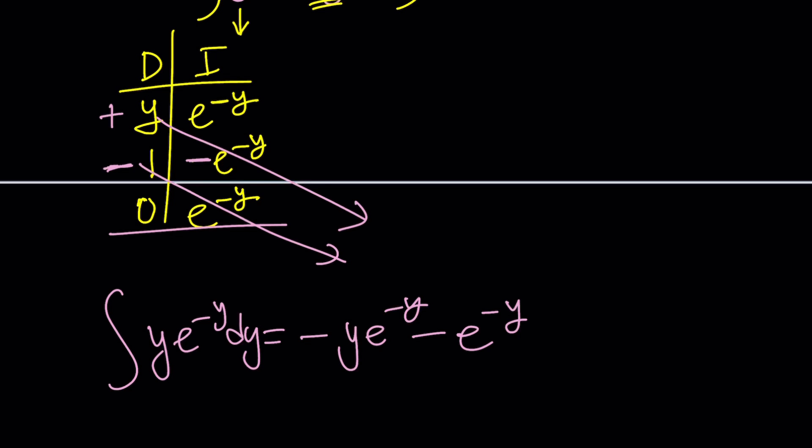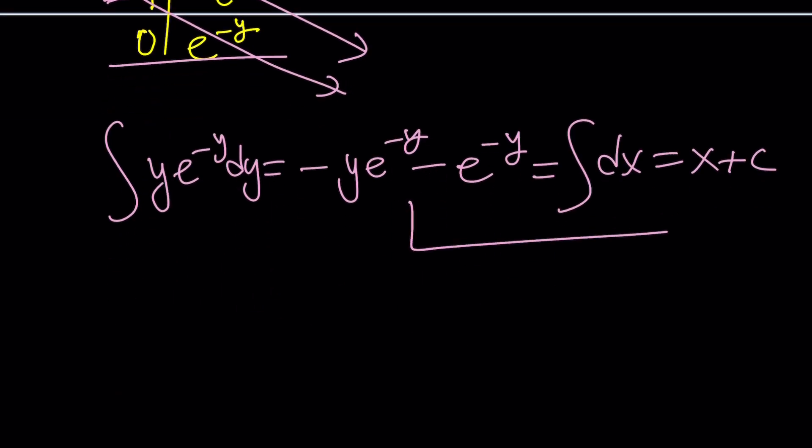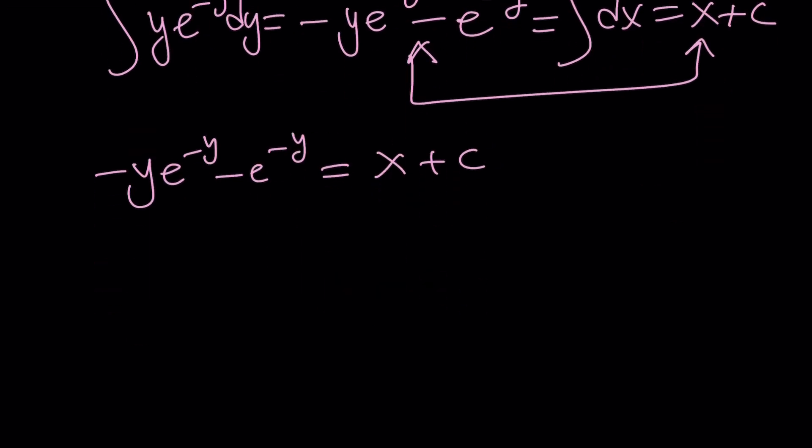But guess what? We have the integral of dx on the right hand side. And I can just call that x plus c. Okay? Now, let's go ahead and set these equal to each other. And go from there. Negative y e to the negative y minus e to the negative y equals x plus c. As you can see, x is almost alone. We can subtract c from both sides, which is a constant.